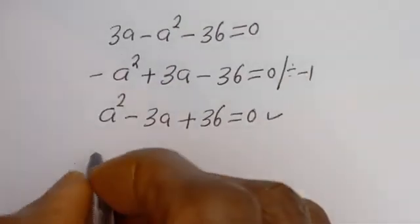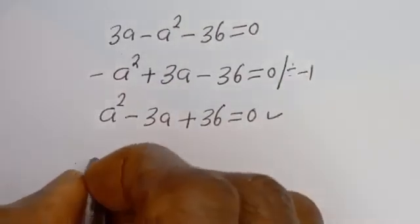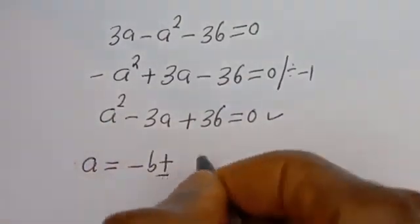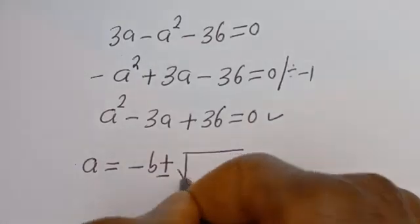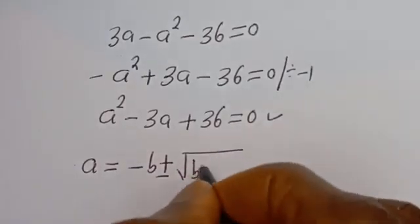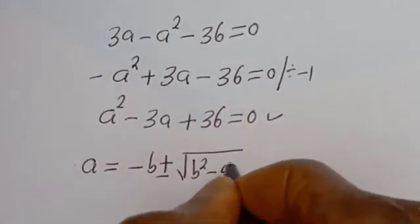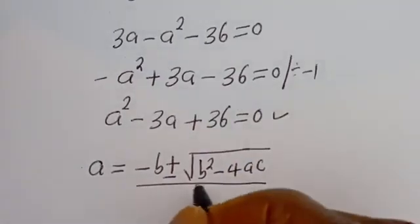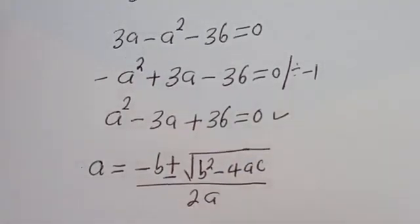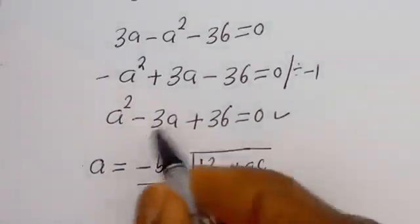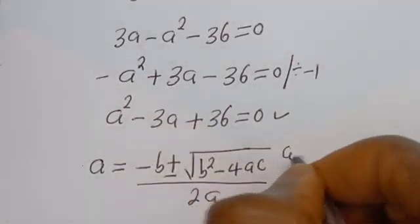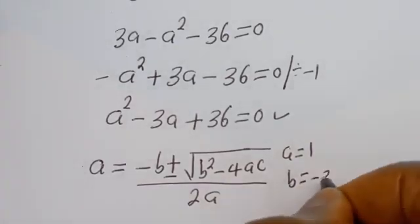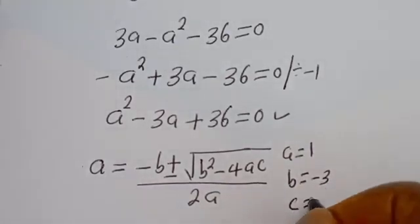Let's apply the quadratic formula: a is equal to minus b plus or minus the square root of b squared minus 4ac, divided by 2a. From this equation, a equals 1, b equals minus 3, and c equals 36.